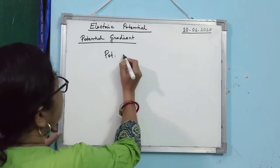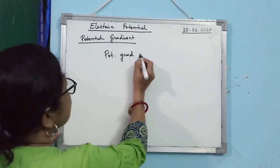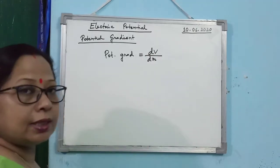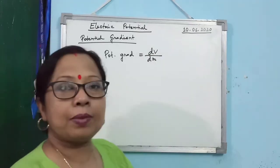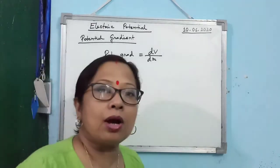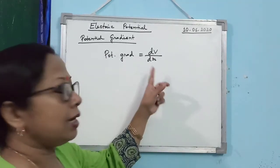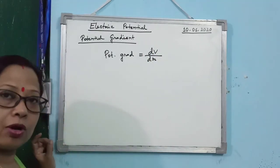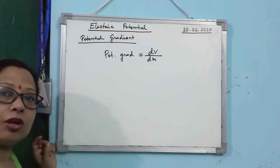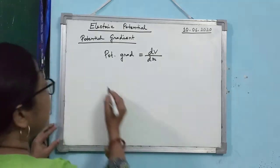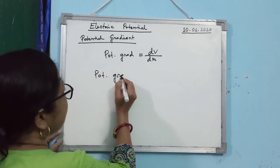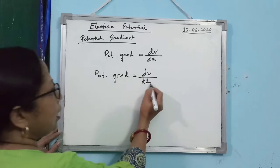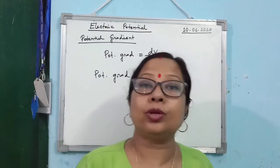You can write potential gradient as dV/dR, where dV represents change in potential divided by change in position. Sometimes when potential is changing along one dimension or length only, we write it as dV/dL.